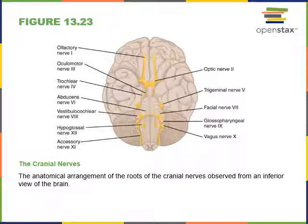Cranial nerve three is the oculomotor nerve. It sends motor commands to excite most of the eye muscles. It extends from the midbrain to the extraocular eye muscles via somatic pathways. There are also parasympathetic motor pathways through the oculomotor nerve that regulate the smooth muscles inside the eye in the iris and ciliary body.